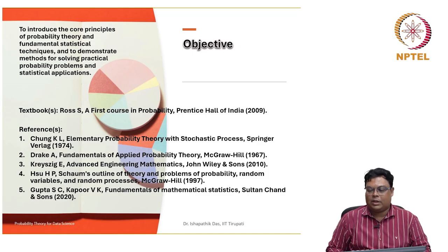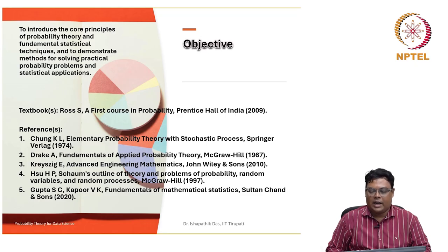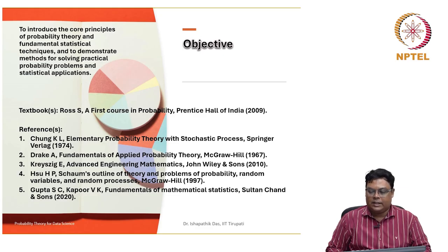Another reference is Fundamentals of Applied Probability Theory by Drake, and Advanced Engineering Mathematics by Krasik. Most of the slides have been taken from Schaum's Outline of Theory and Problems of Probability. In this book you will see many worked-out examples, and the sequence I have followed is from this book by H.P. Hsu — Schaum's Outline of Theory and Problems of Probability, Random Variables and Random Processes, McGraw Hill, 1997.